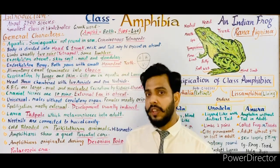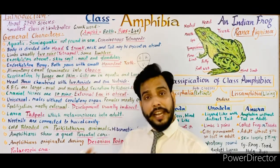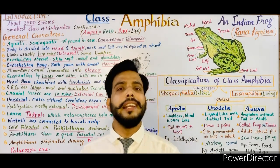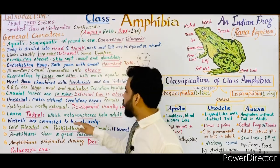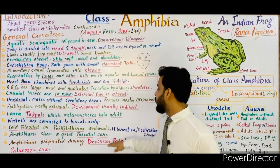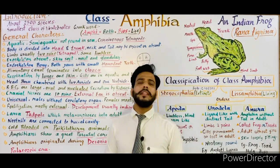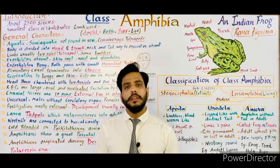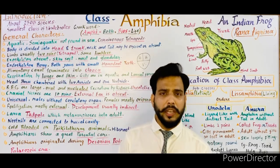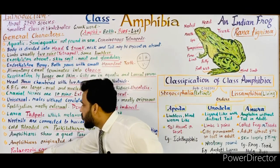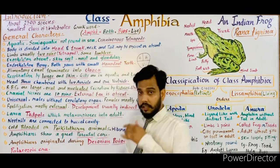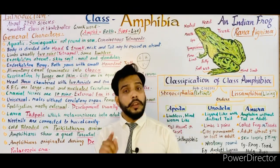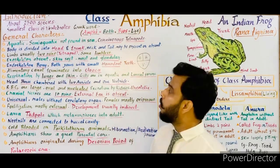Amphibians show great parental care — they look after their young ones, protect their eggs, build shelters, and protect their larvae. Amphibians originated during the Devonian period of the Paleozoic era. According to the geological time scale, there are different eras including Cenozoic, Mesozoic, and Paleozoic. Amphibians developed during the Devonian period of the Paleozoic era.